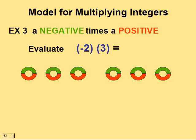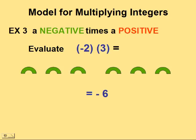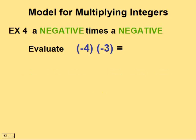Now we have something to take away. Starting with a blank slate of zero, we will take away two groups of positive three: one group of positive three, two groups of positive three. We are left with six negatives — negative two times three equals negative six.